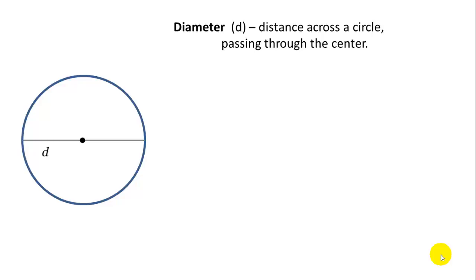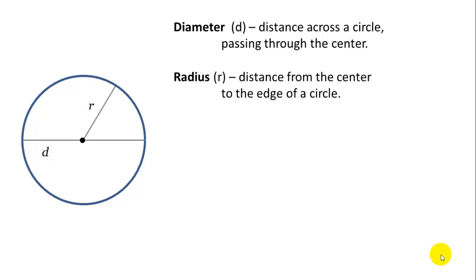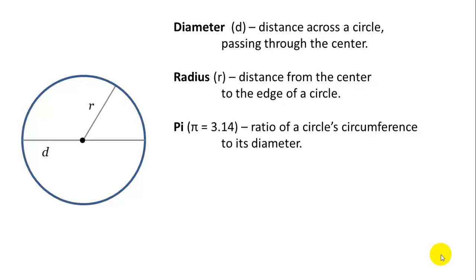Circles have a diameter, which is a line across the circle that passes through the center — we'll call that diameter D. Circles also have a radius, which is the distance from the center to the edge of the circle, so the diameter is 2 times the radius in every circle. Circles also have this constant value called pi. Pi is equal to 3.14 — it is the ratio of the circle's circumference to its diameter, so pi equals C over D. We can rearrange that equation: circumference equals pi times the diameter, which is also equal to 2 times pi times the radius, or 2πr.